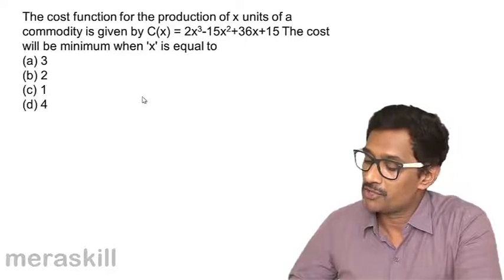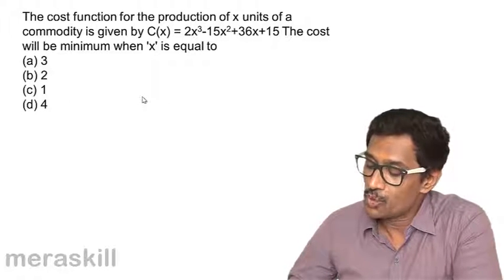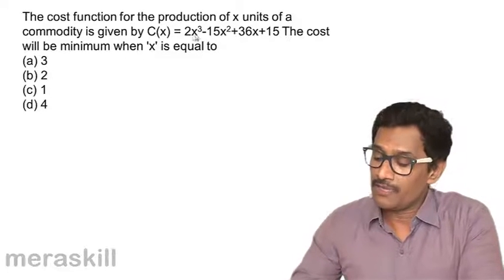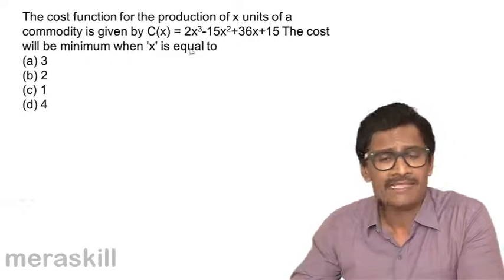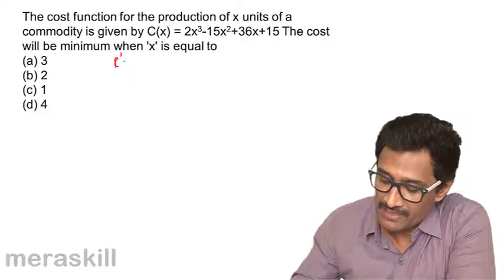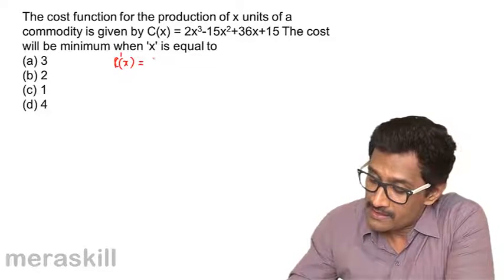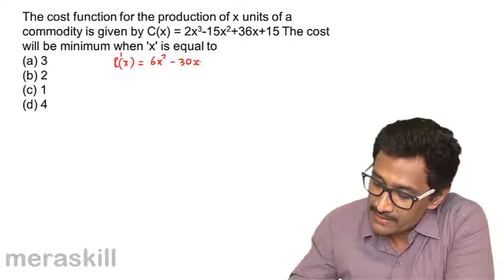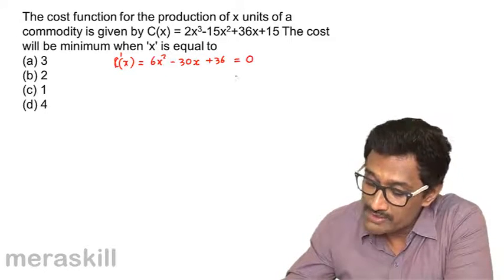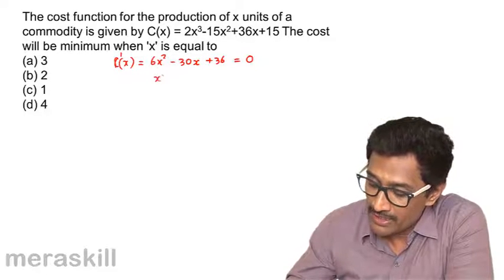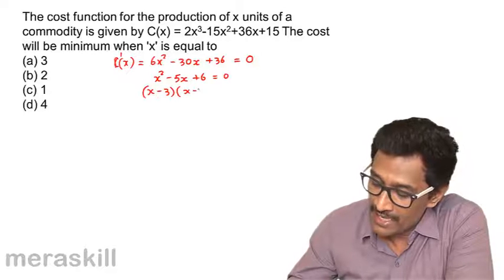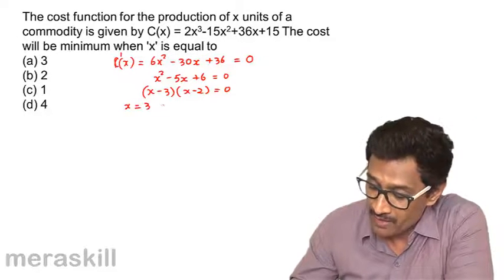The cost function for the production of x units is c(x) = 2x³ - 15x² + 26x + 15. We need to find when cost is minimum. First find c'(x) = 6x² - 30x + 26. Setting c'(x) = 0 and dividing by 2: x² - 5x + 6 = 0, giving (x-3)(x-2) = 0. So x = 3 or x = 2.